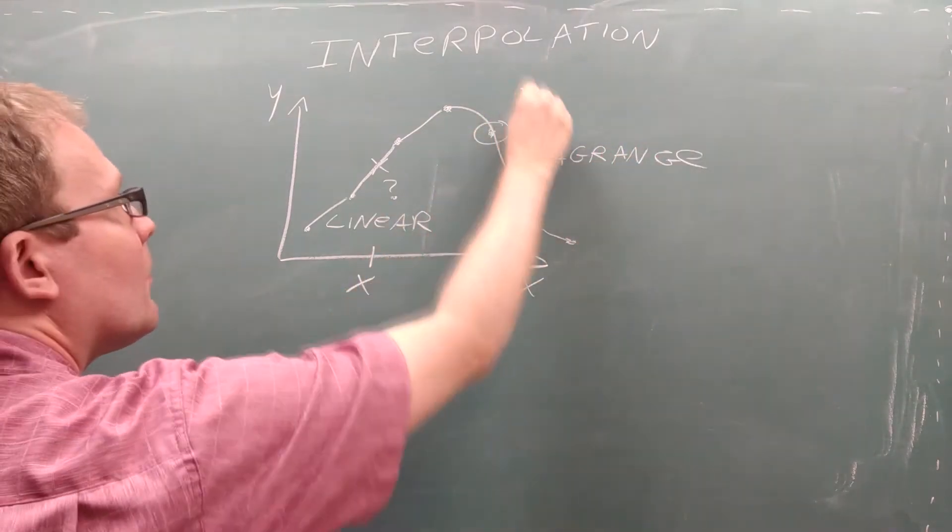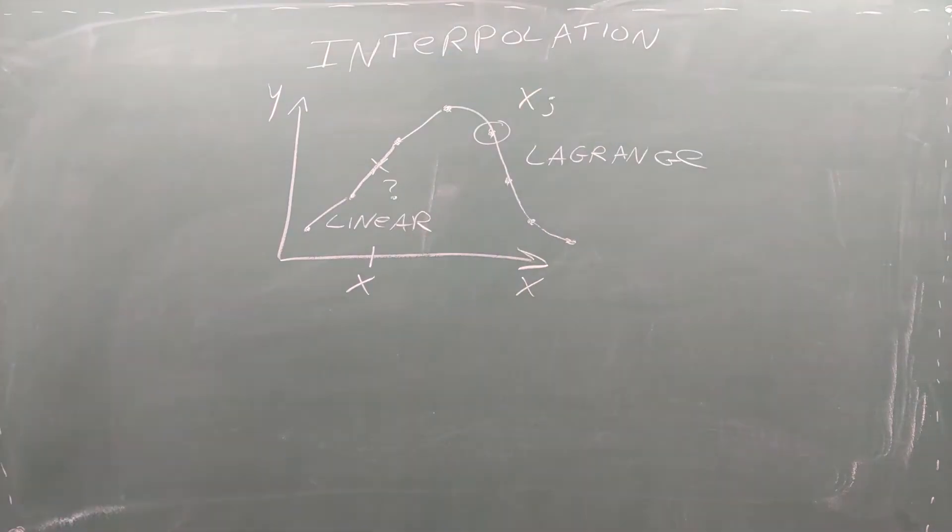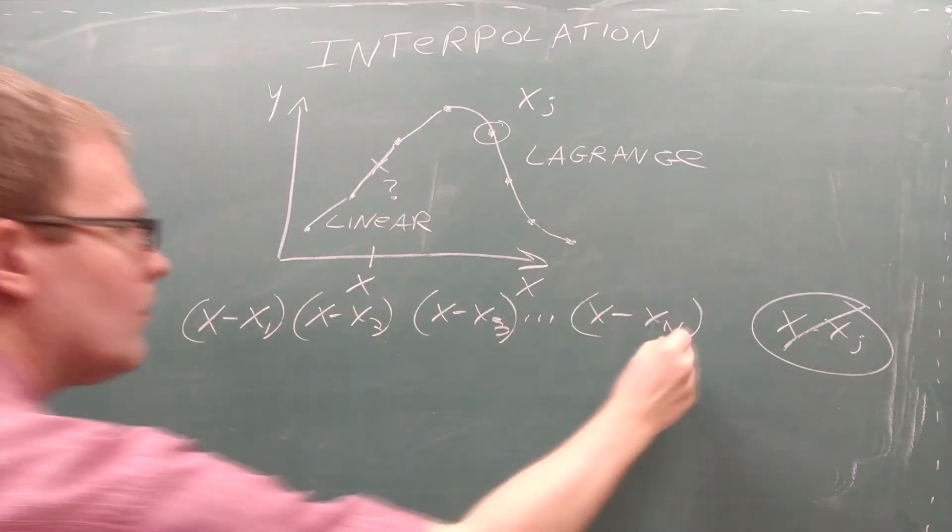First we pick a point in our data set. Let's call it xj. Next we take the x value we're interested in and subtract from it every data point in our set except xj. Then we multiply each of these pieces together.